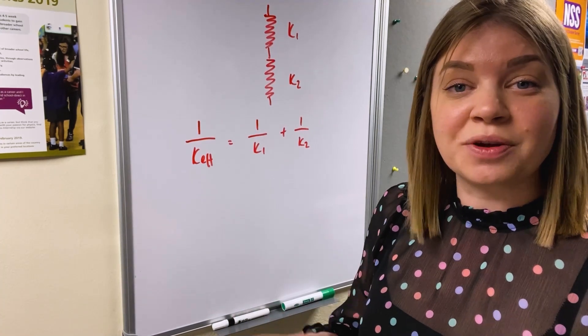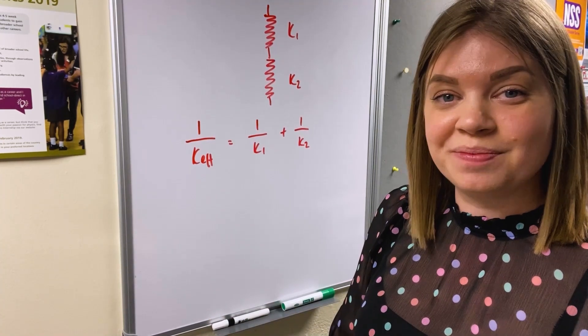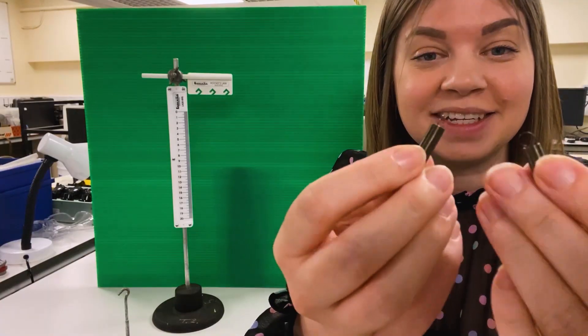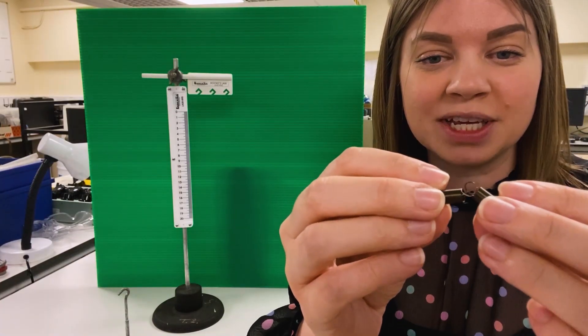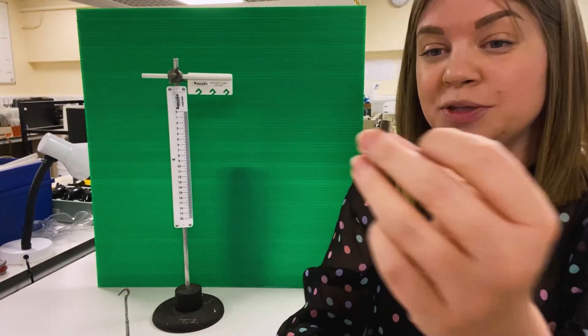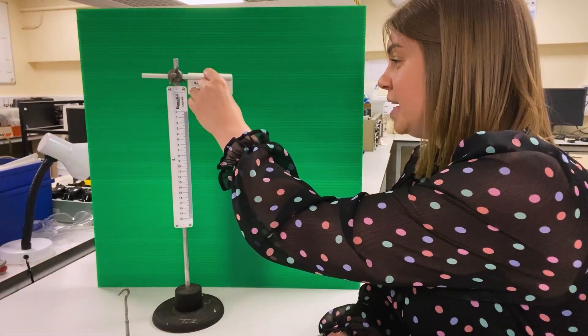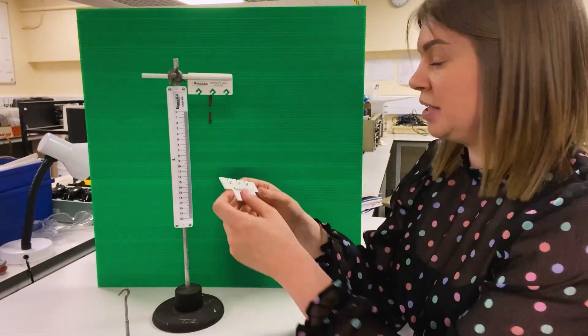I am going to take two springs and hook them together and then I'm going to suspend them from the middle hook in the apparatus and attach the mass suspension bracket.